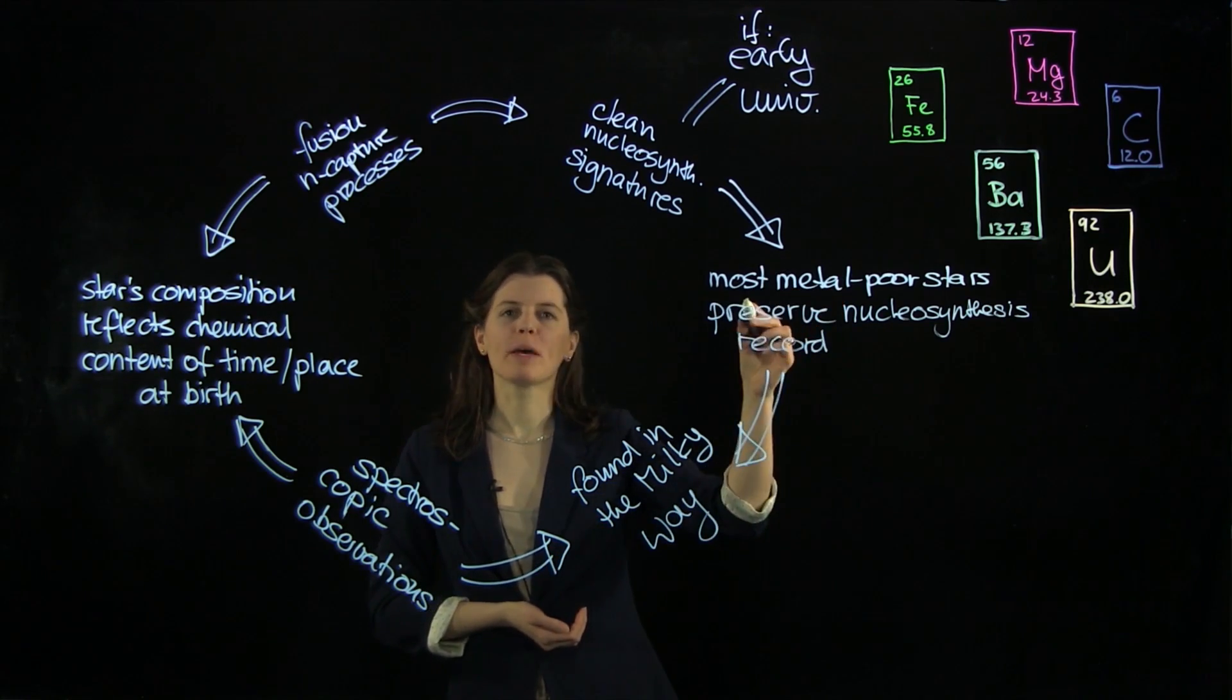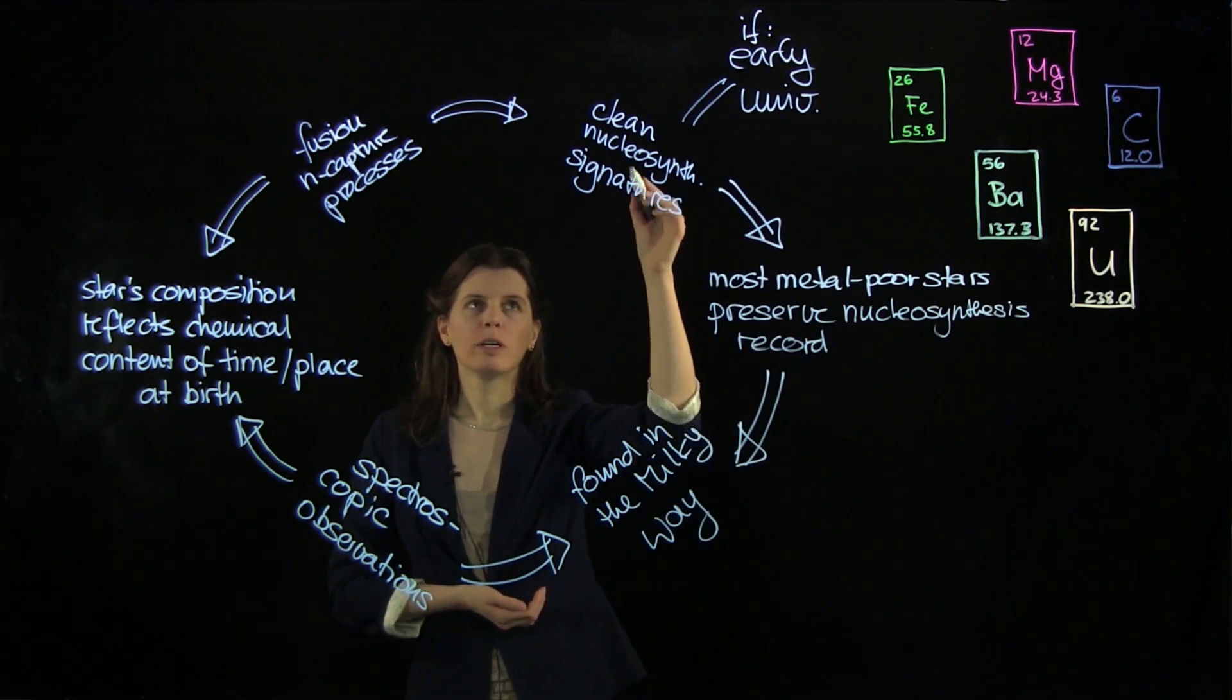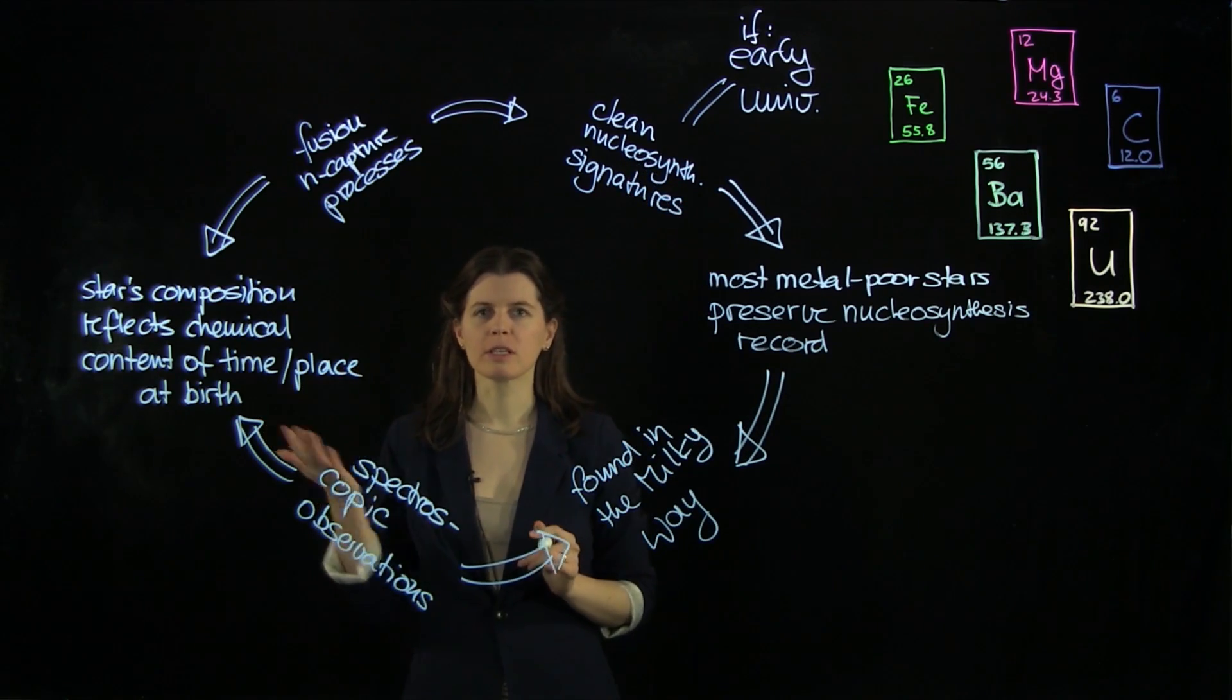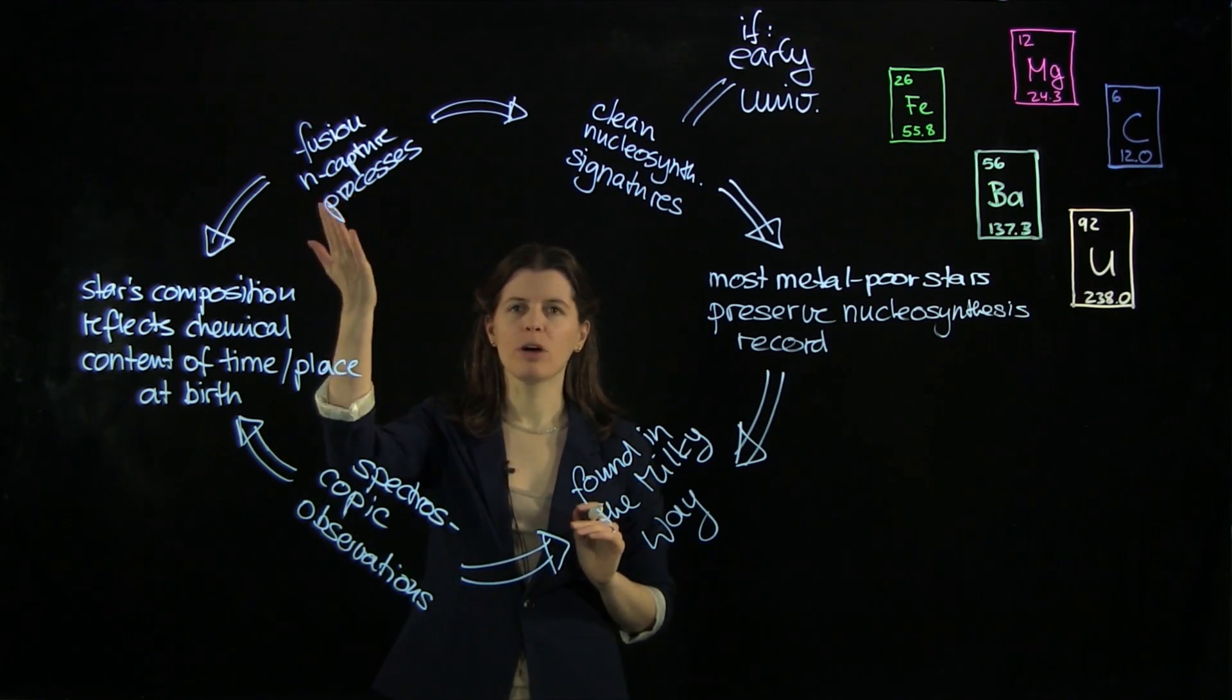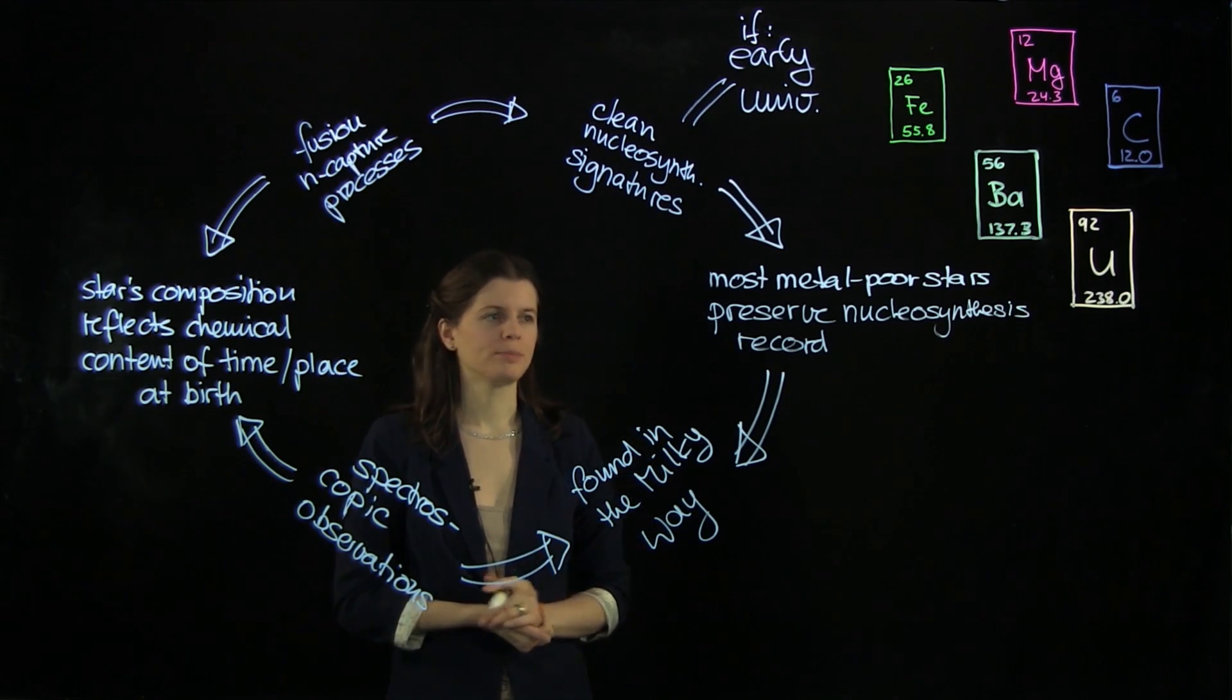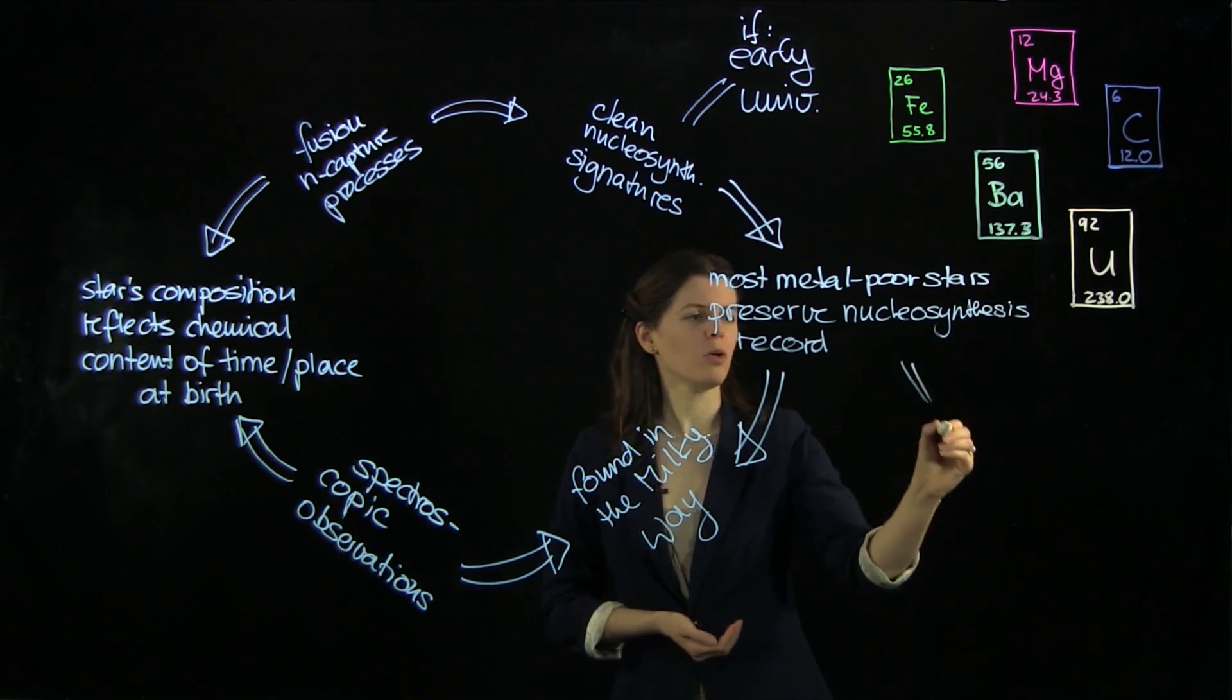And so we use the most metal-poor stars in order to detect these clean signatures and to work with nuclear physicists to understand how these processes exactly work and in what astrophysical sites that might occur. So here we have the oldest stars.